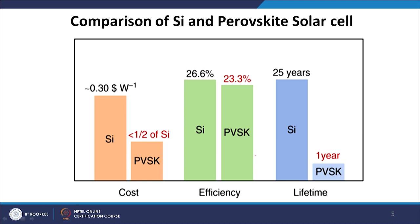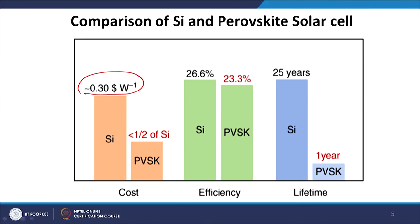If you compare the three parameters of the golden triangle for silicon and perovskite via a histogram: in terms of cost, silicon solar cells cost 0.3 dollars per watt, while perovskite solar cells cost half of that. In efficiency, silicon can go up to 26.6 percent, with module efficiency around 20–21 percent; amorphous silicon gives 15–16 percent routinely. Perovskite solar cell efficiency is almost comparable at 23.3 percent. So efficiency-wise perovskite and silicon are comparable, and cost-wise perovskite can beat silicon.